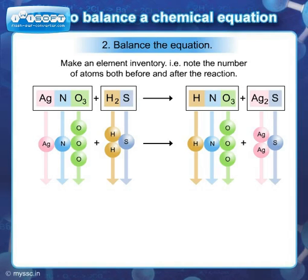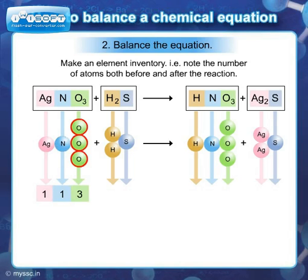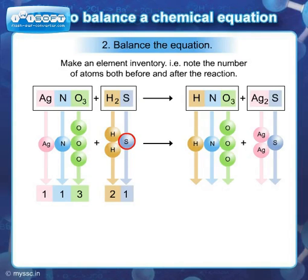On the reactant side: Ag has one atom, N has one atom, and since it is O3, there are three atoms of O. Since it is H2, there are two atoms of H and one atom of S.